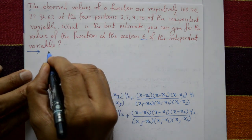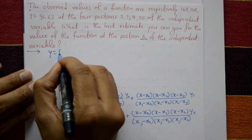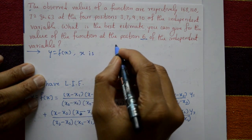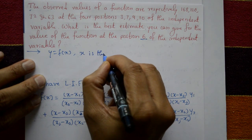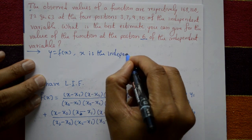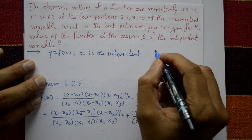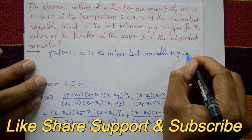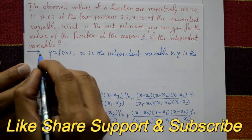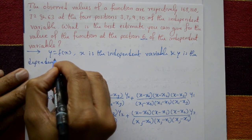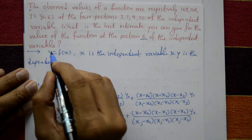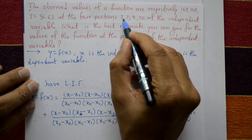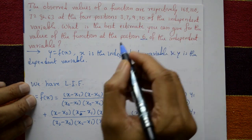Now y is equal to f of x, this general function. x is the independent variable and y is the dependent variable. x is independent, y is the dependent variable. Now see 3, 7, 9, 10 — these are independent variables.